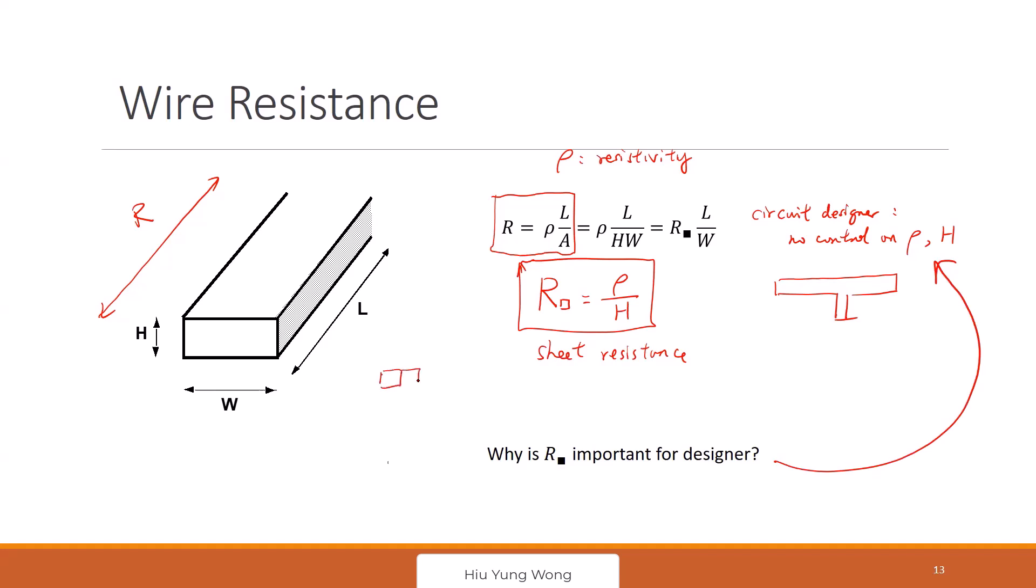If I have a wire like this, just give you some cases. So what is how many sheet resistance do I have? It has three units. So it has three R squared, because it's very long.